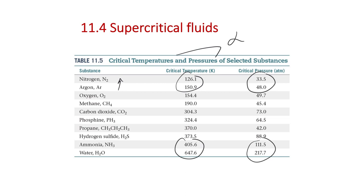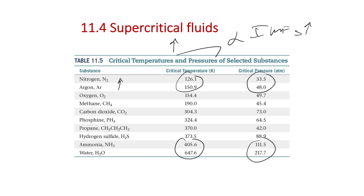In this chapter, the only property that goes inversely with intermolecular force strength is vapor pressure. Vapor pressure is the only property where strengthening the force of attraction makes it harder for the liquid to escape into the vapor phase, therefore lowering the vapor pressure.